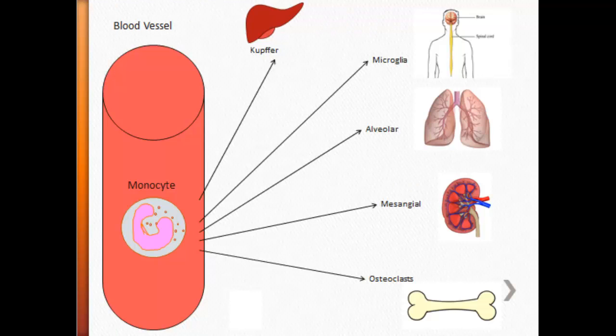Very briefly reminding ourselves about our resident macrophages. We have our circulating monocyte in the blood and then it moves out into the tissues. And depending on which tissue it moves out into, it gives us our various resident macrophages from our Kupffer cells to our osteoclasts and everything in between. And we'll be having a closer look at microglia here, which are of course the resident macrophages in your CNS.